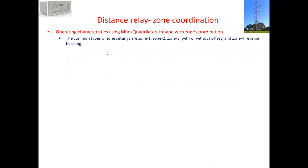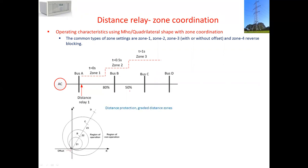The common types of zone settings are zone 1, zone 2, zone 3, and zone 4. If you look at the single line diagram, we have a relay and three zones. Zone 1 has a trip time of 0 second, zone 2 is 0.5 second, and zone 3 is 1 second. Zone 1 is at 80% of the line and zone 2 is at 50% of the next line. We'll discuss later in more detail why we choose these settings.